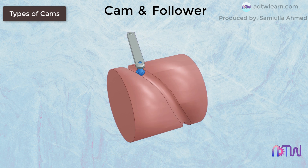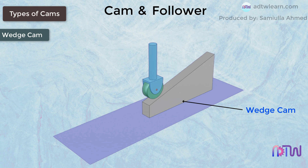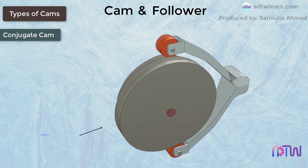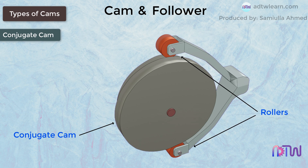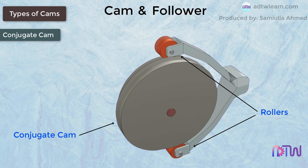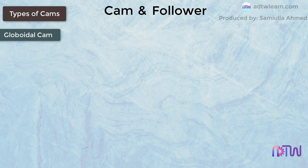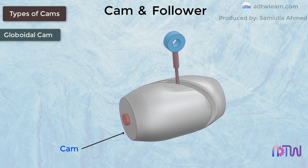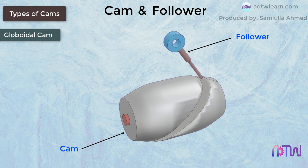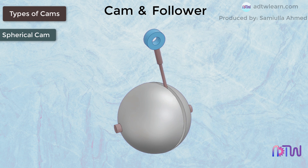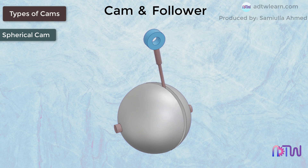The third type is the wedge cam, whose motion is a sliding motion and the shape is in the form of a wedge. Then we have the conjugate cam, which is provided with two rollers connected to the cam; this arrangement constrains the motion of each other and provides noiseless operation. The globoidal cam is similar to the cylindrical cam but the surface is either convex or concave, and the follower oscillates about the fulcrum. The spherical cam is in the form of a sphere and is provided with a groove along which the follower moves.